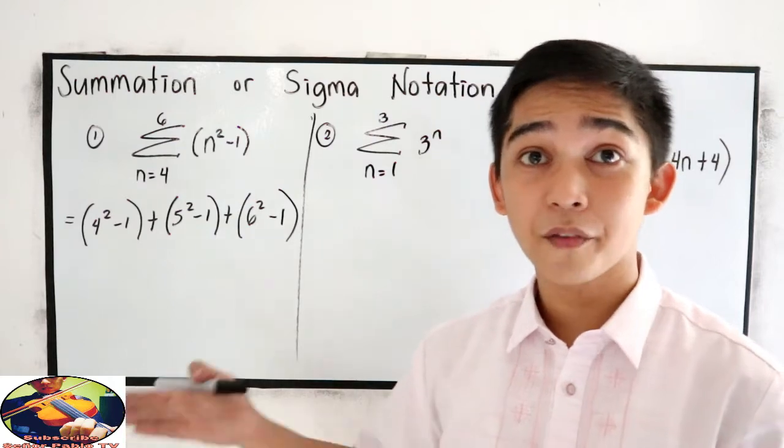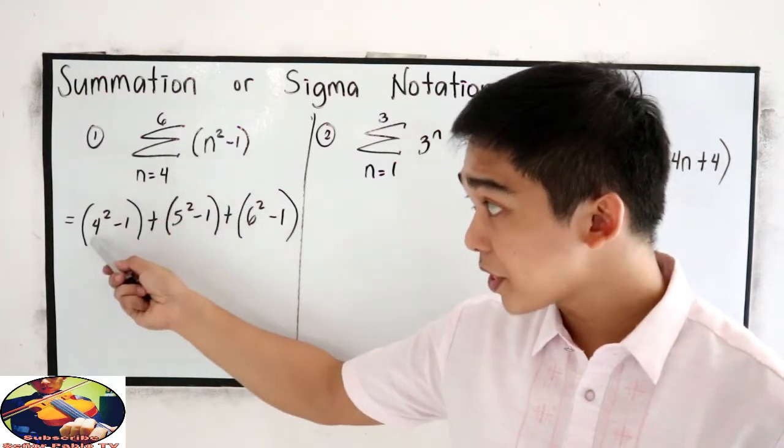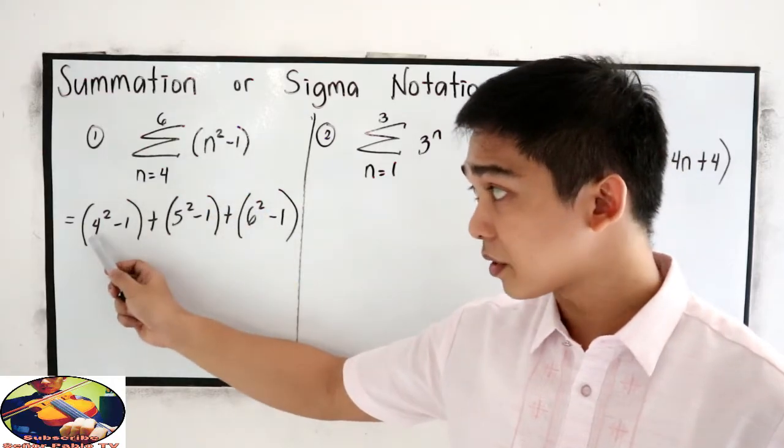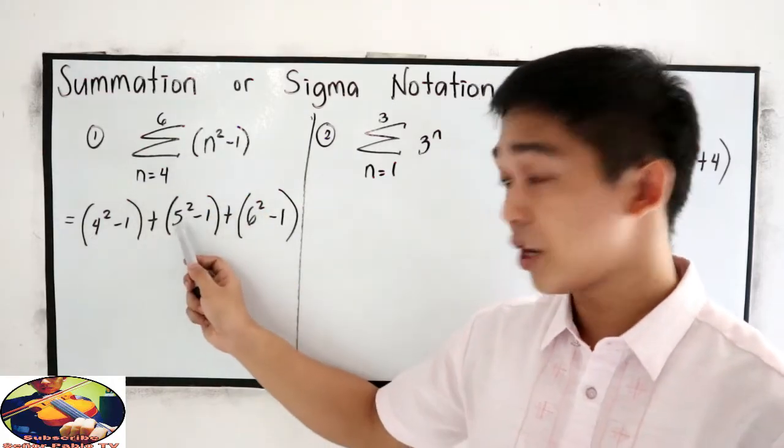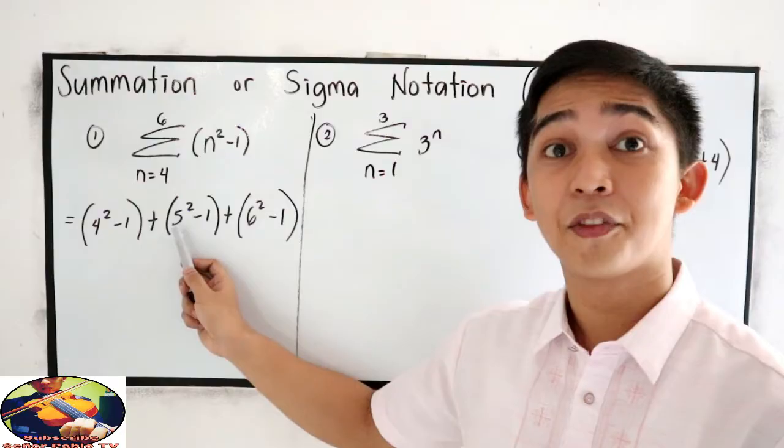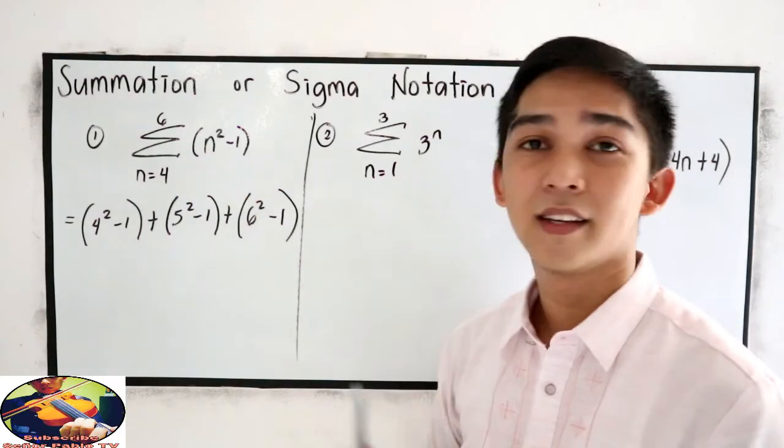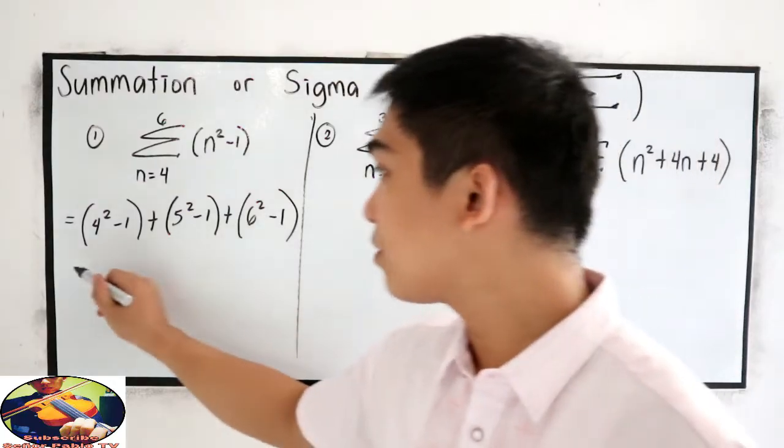Again, let us have a short review. Let us start with 4, so just change your N to 4. After 4, change to 5. Then after 5, change to 6. That would be our ending number. Now simplify.